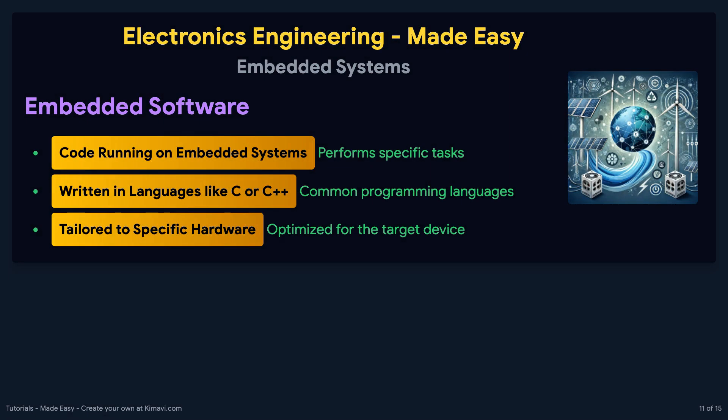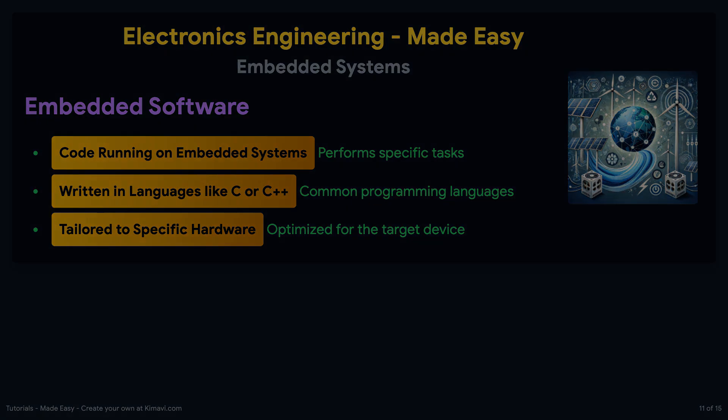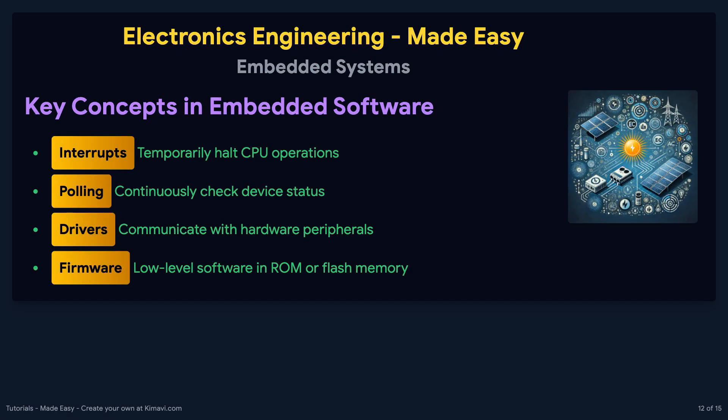Embedded software is the code running on an embedded system designed to perform specific tasks. It is typically written in languages like C or C++ and is tailored to the hardware it runs on. Key concepts include interrupts, which temporarily halt the CPU's current operations to execute a specific piece of code known as an interrupt service routine, and polling, which involves continuously checking the status of a device or condition in a loop.